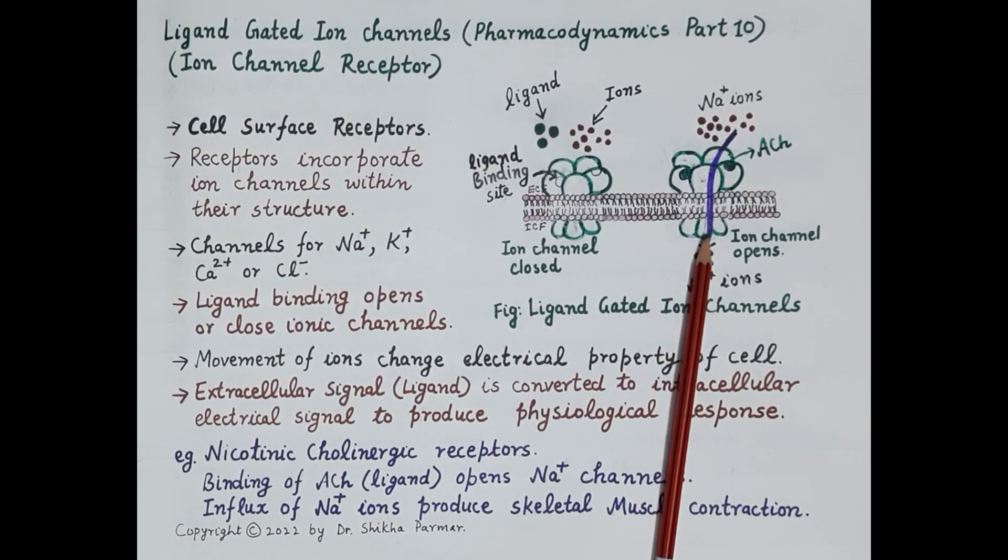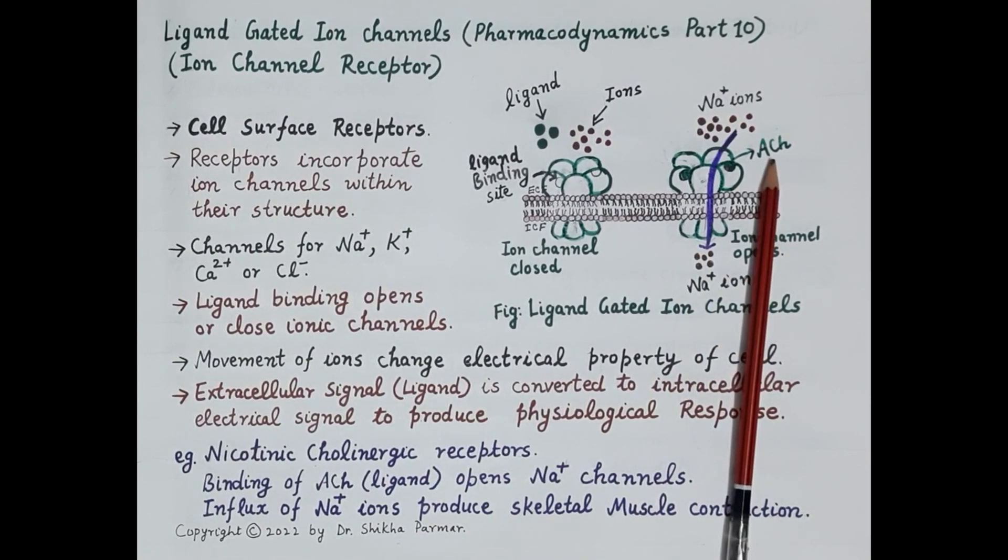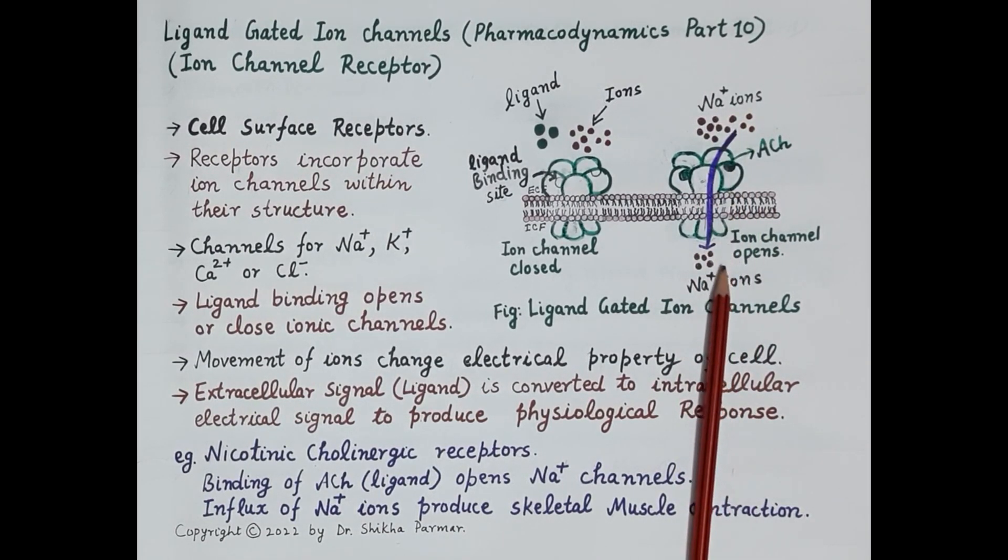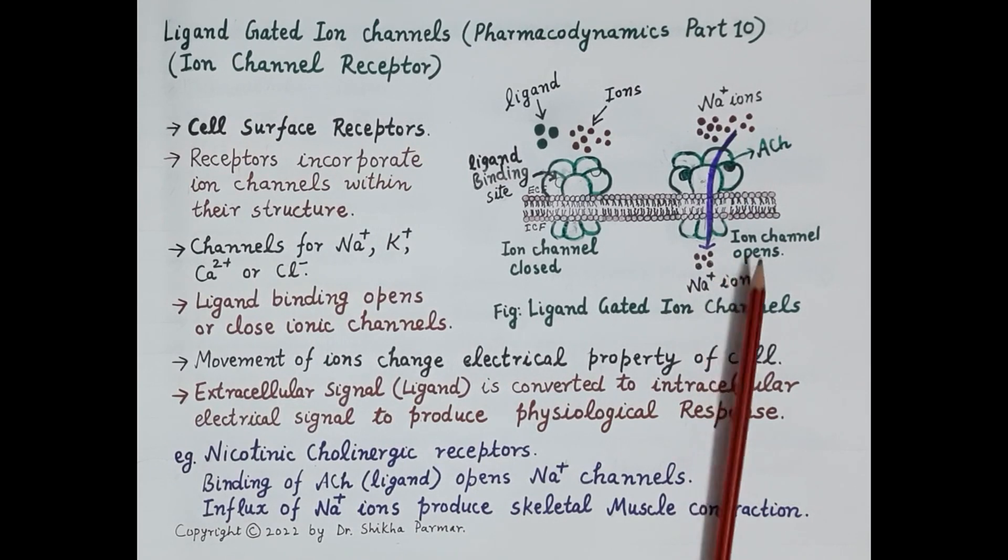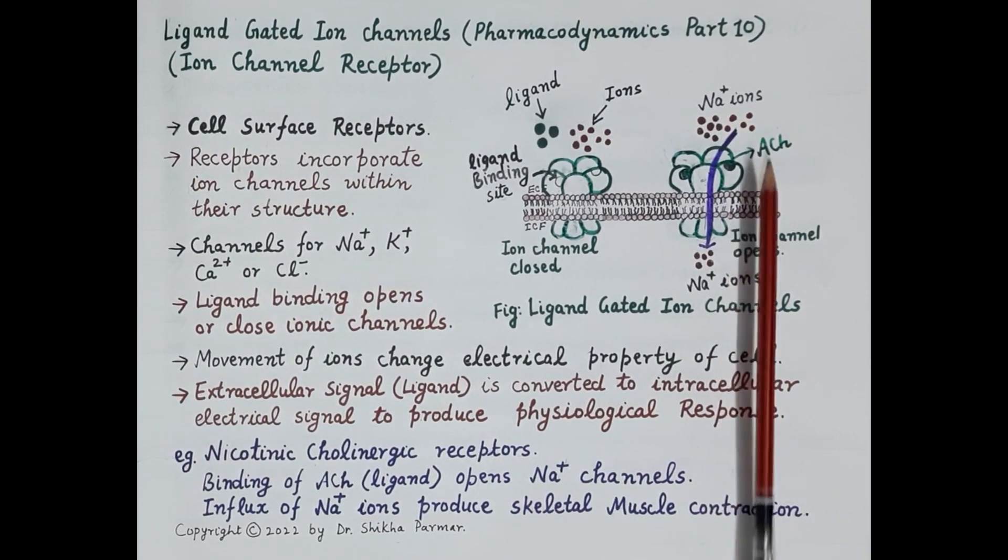It's very important to remember that nicotinic cholinergic receptors are ligand-gated ion channels. Binding of acetylcholine to these receptors opens sodium channels, and sodium ions move inside the cell. Movement of ions constitutes the signaling pathway.